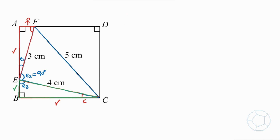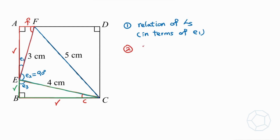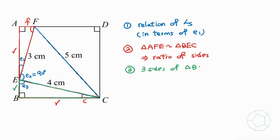The outline of the detailed solutions is as follows. Number one: obtain the relation of angles — in particular, express all angles in terms of E1. Number two: prove that the two red triangles, triangle AFE and triangle BEC, are similar to each other and find their ratio of size. Finally, look at the three sides of the green triangle BEC, and use the Pythagorean theorem to solve for the side length and find the area of the square.